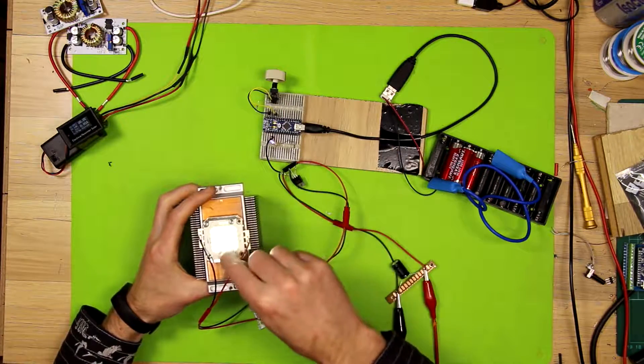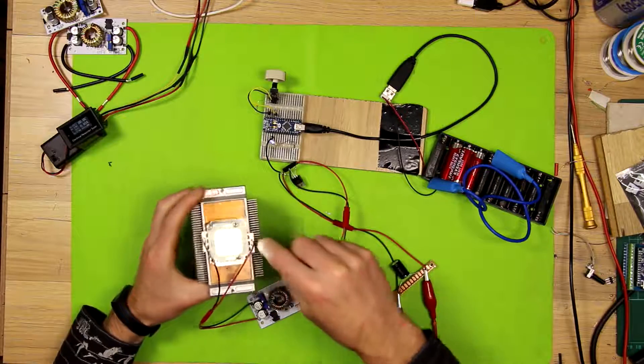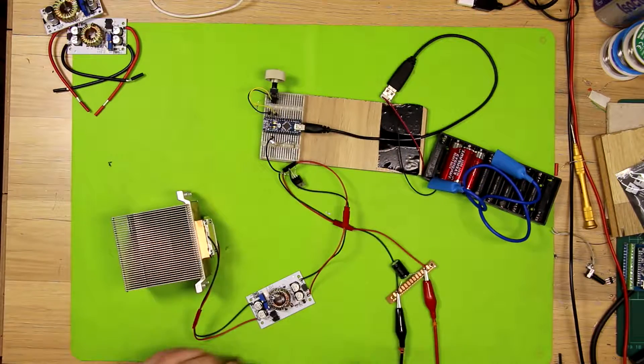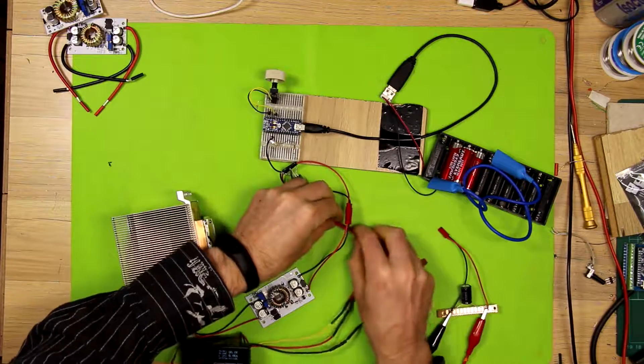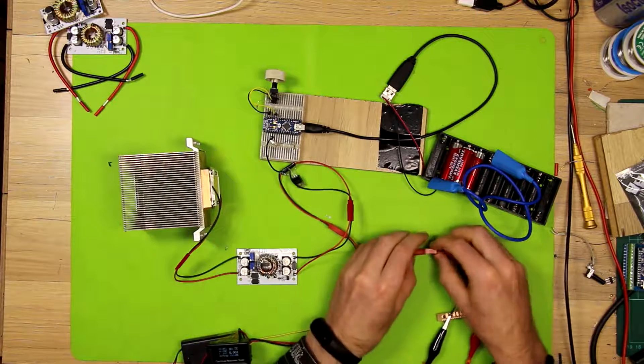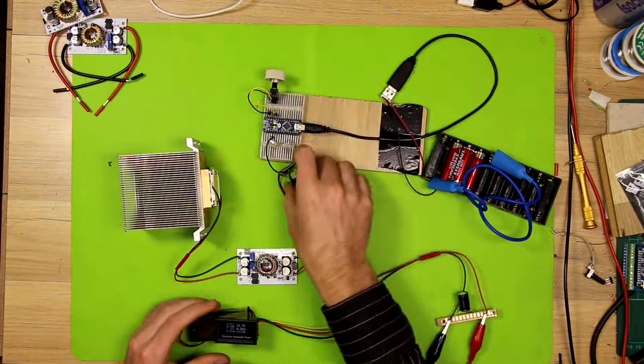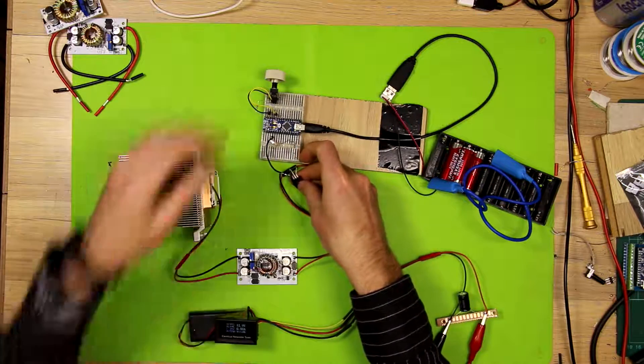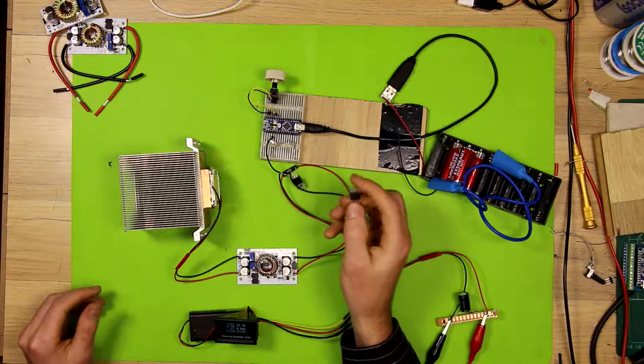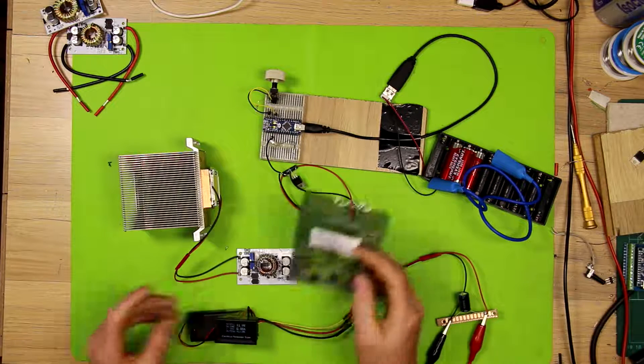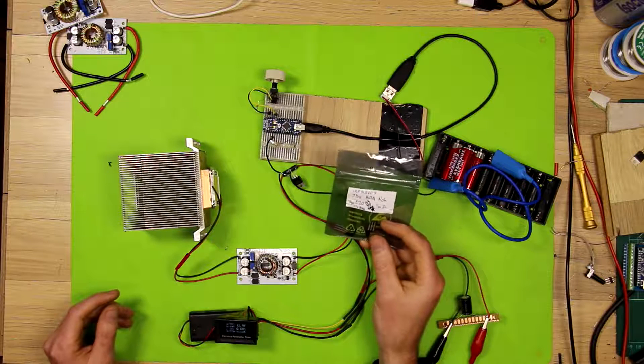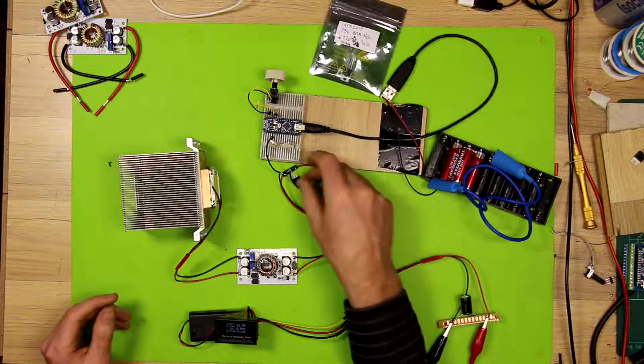So I'll just power this up. I'm just running this off 3 AA batteries which gives 1.5 volts per battery so 4.5 volts. Power in through the MOSFET through the LED driver and into the LED. And there we are.